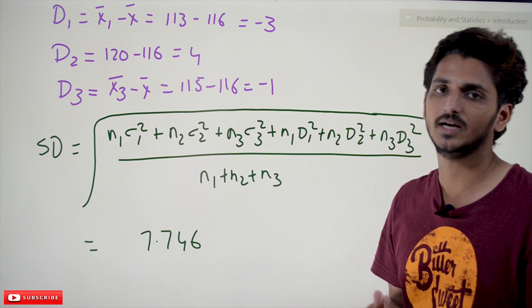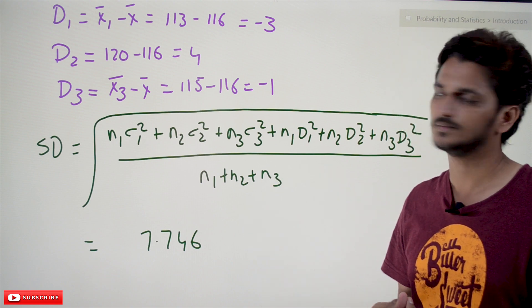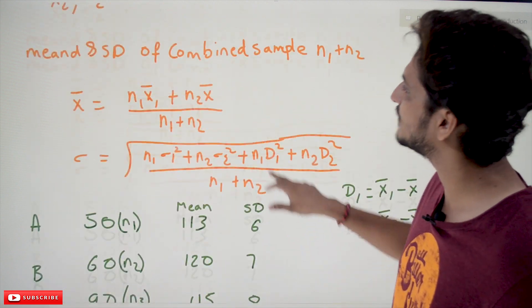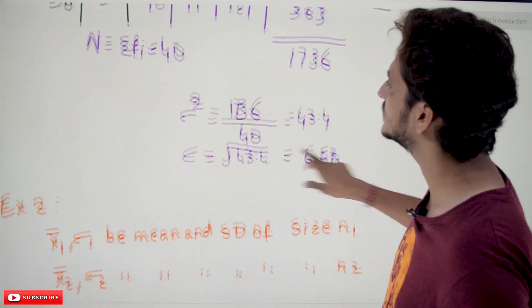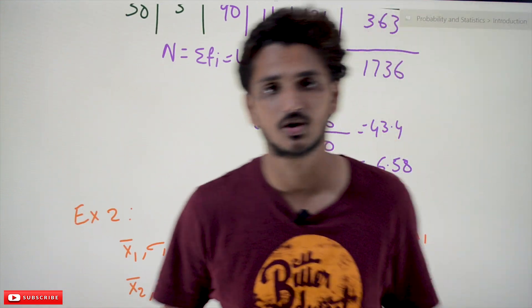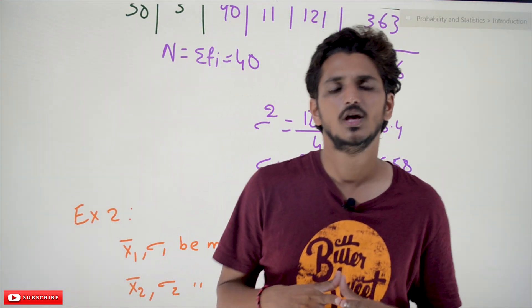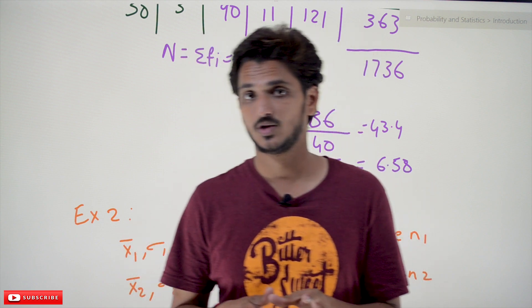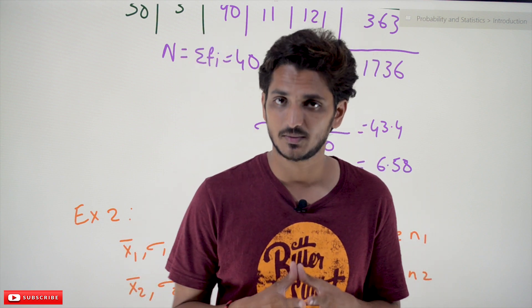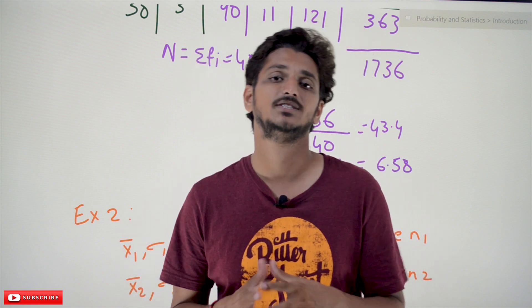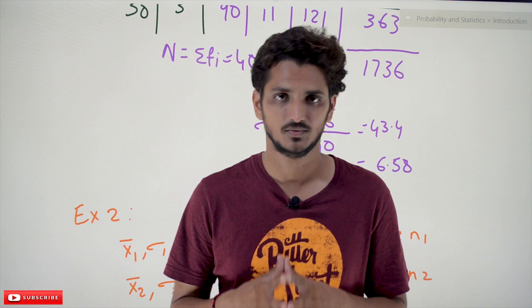This is how we find the mean and standard deviation for a whole combined set of data points. Hope you understand these examples. If you have any questions regarding the concept, please post your questions in the comment section below. Thanks for watching. If you haven't subscribed to our channel, please subscribe and press the bell icon for the latest updates. Thank you.